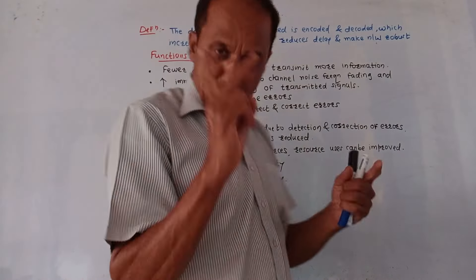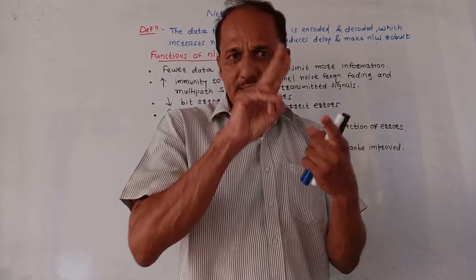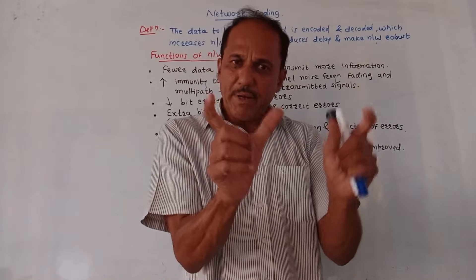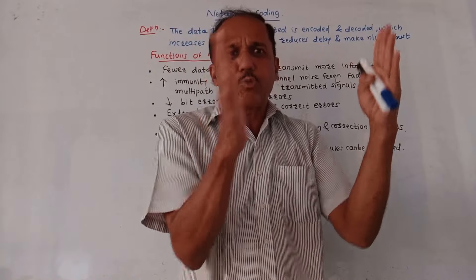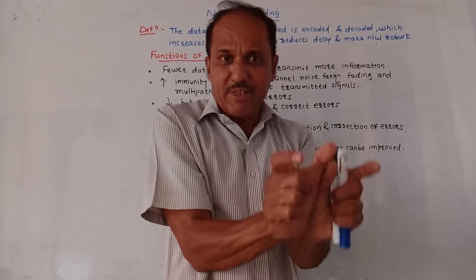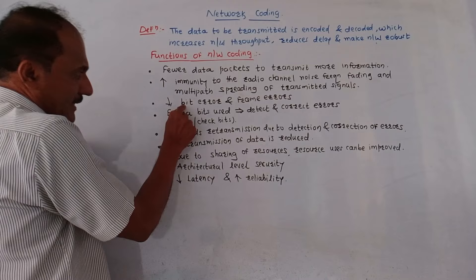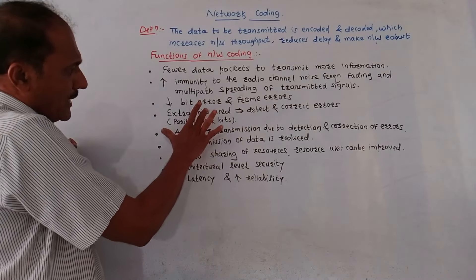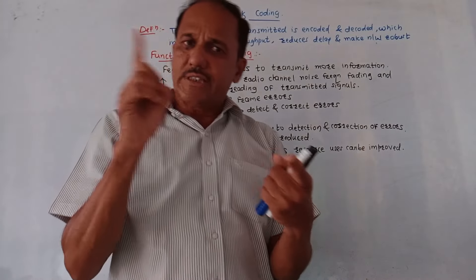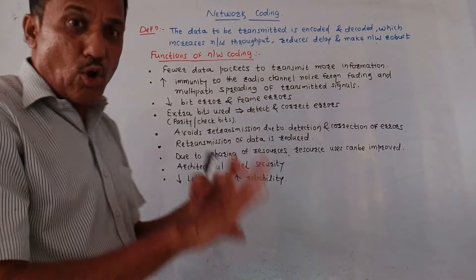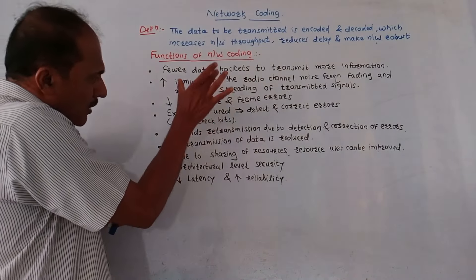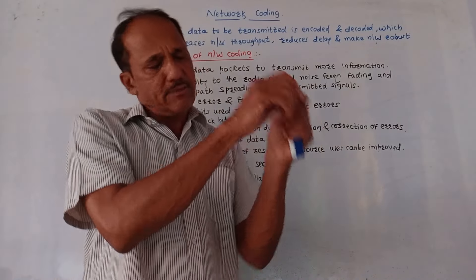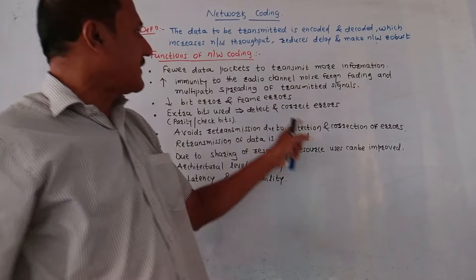There are two types of major errors: bit error, where one particular bit is in error, and frame error, where a number of bits form a frame and the entire frame can be in error. In network coding, certain extra bits called parity bits or check bits are used, making it possible to detect as well as correct some errors at the receiver end.